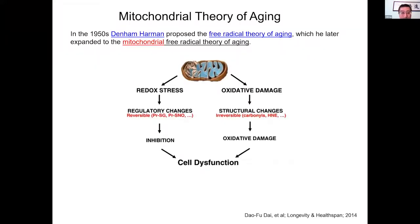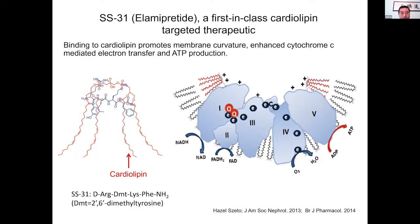In the 1950s, Dr. Denham Harman already proposed the free radical theory of aging, and later the mitochondrial free radical theory of aging. But 70 years have passed and so far no clinical drugs can treat cardiac aging. Our research focuses on SS31 peptide — the clinical name is Elamipretide. This SS31 is a small peptide with four amino acids. It can be incorporated into cardiolipin, which is abundant in the mitochondrial inner membrane, and can promote maintenance of mitochondrial membrane curvature.